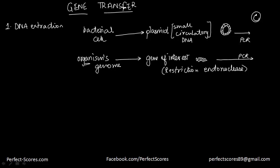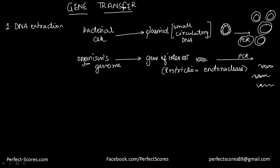Both the plasmid and the gene of interest are then amplified using the polymerase chain reaction, giving you lots of copies of each. If you want to know more about PCR, you can watch the videos specifically on DNA profiling and the polymerase chain reaction. So that is the first step — DNA extraction — where the bacterial cell's plasmid is taken and the organism's genome gives you the gene of interest using the restriction endonuclease enzyme.